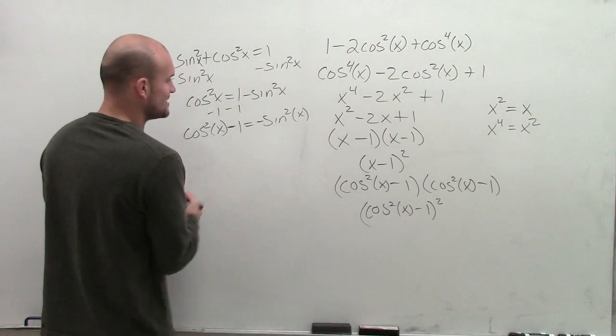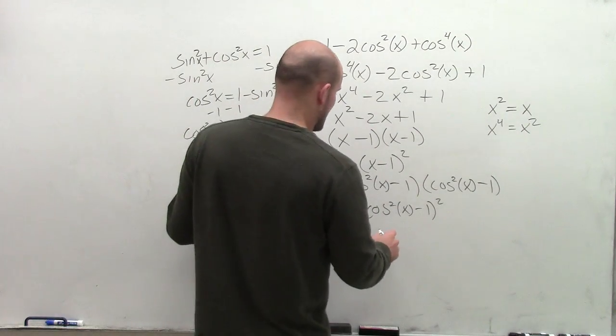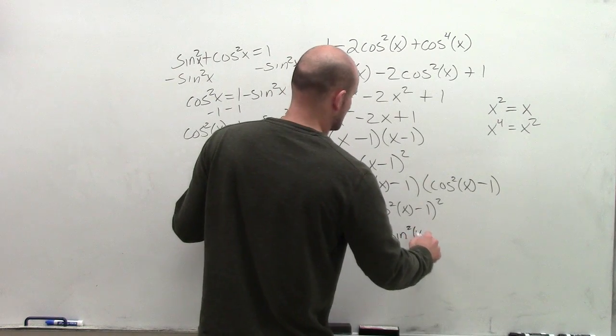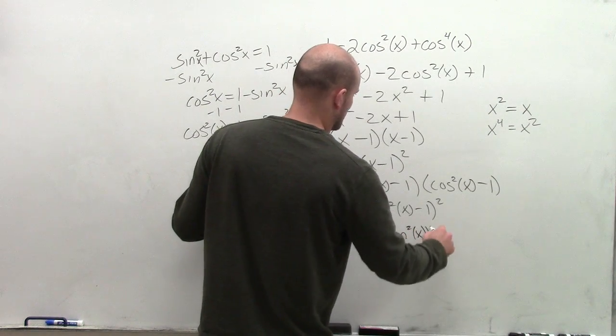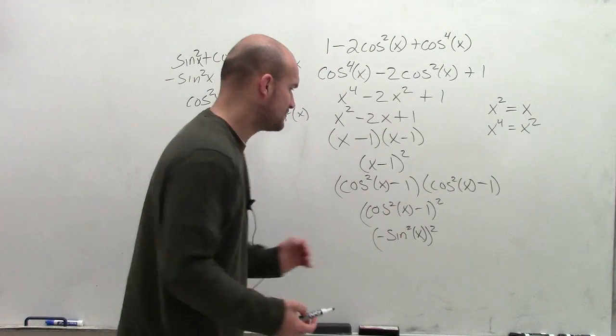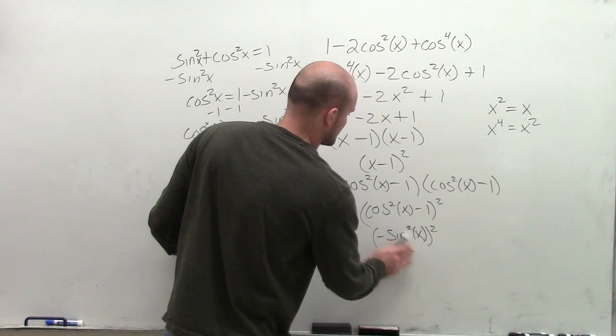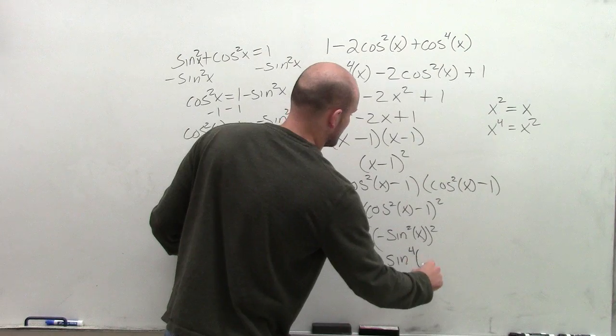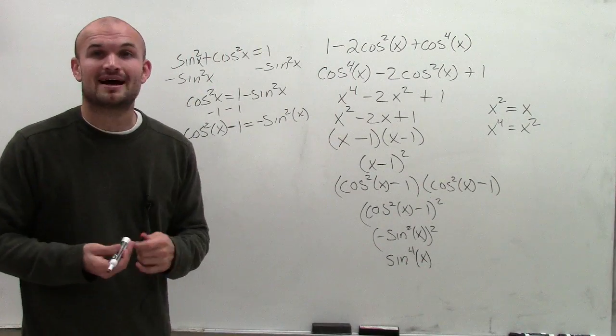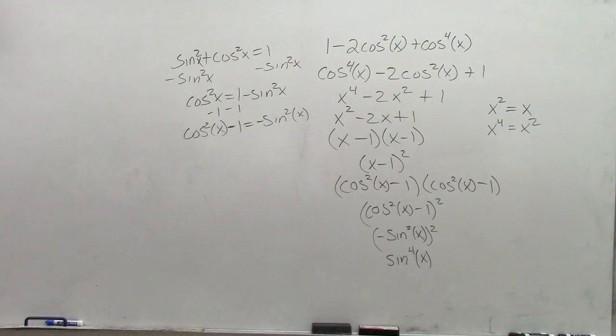So we have cosine squared of x minus 1 equal to negative sine squared of x. So I can have negative sine squared of x squared. Now by working it through, I can say this is going to be a positive sine to the fourth power of x. So there you go, ladies and gentlemen. That's how you simplify trigonometric expressions by factoring. Thanks, guys.